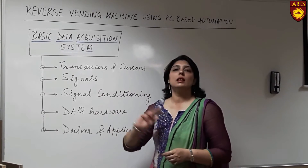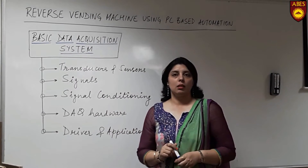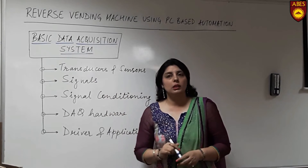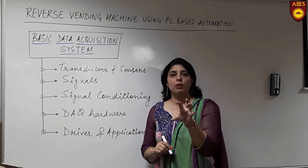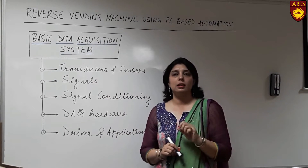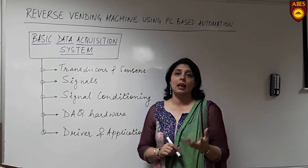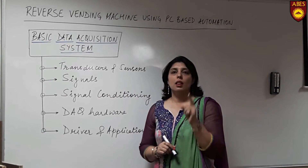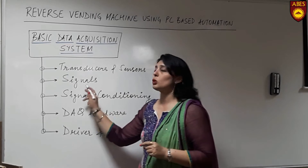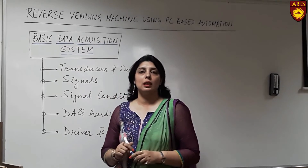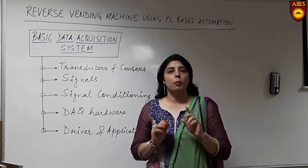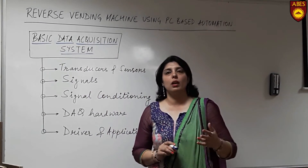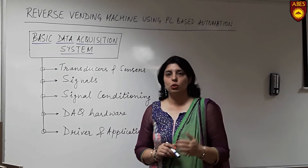The second component is the signal. The transducers have already converted the physical phenomena into measurable signals, so these signals can be analog or digital in nature. The important aspects with respect to the signals are that they should have a proper sampling rate, proper level, and proper frequency.